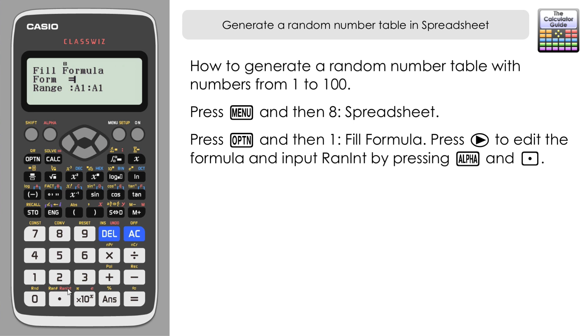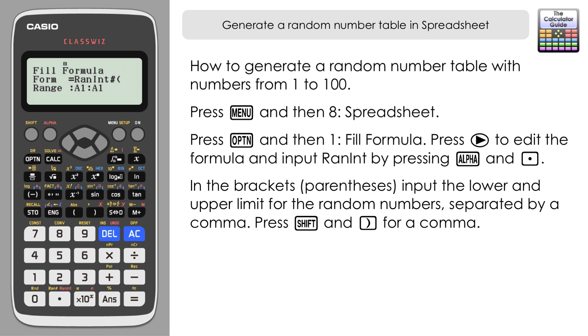This is where we need to put the range that we want to generate the random numbers between. I'm going to start off with 1, so the lowest integer is 1.